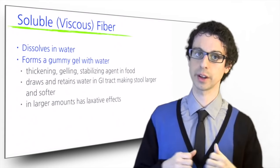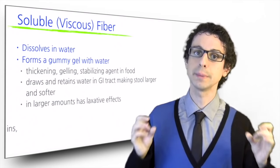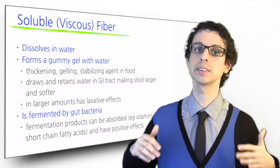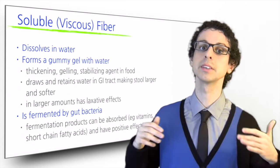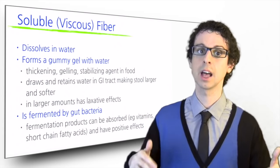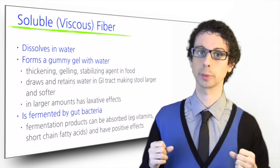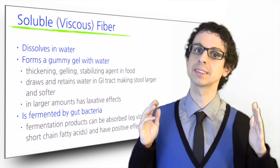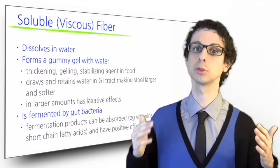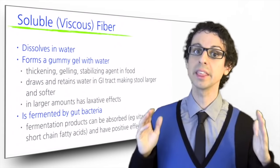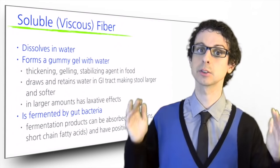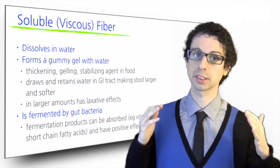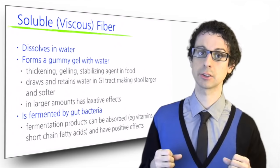Soluble fiber has another very important property: it is fermented by the bacteria in our colon. The fermentation of soluble fiber generates different substances, including some vitamins and short-chain fatty acids, which can be subsequently absorbed. Since these molecules provide some energy, soluble fiber ends up having some caloric value, usually around 2 calories per gram. More importantly, these short-chain fatty acids exert important functions both directly in the intestine and in our body, such as cancer-protective and cholesterol-lowering effects.